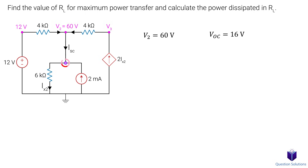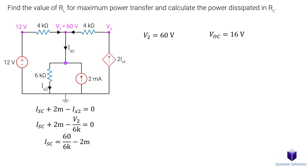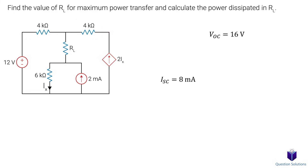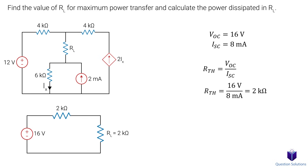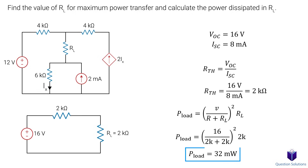Next, we write a KCL for this point to figure out ISC. Any current coming in is positive and any current leaving is negative. We have ISC coming in, 2 mA coming in, and IX2 leaving. IX2 equals node 2 over 6k, and node 2 is 60 volts. Solving gives us 8 mA. Now that we have both VOC and ISC, we can figure out RTH. We get 2k ohms. Drawing our Thevenin equivalent circuit: 16 volt source, RTH of 2k ohms, and load RL also equals 2k ohms. Using our power equation, we get 32 milliwatts, and that's our answer.